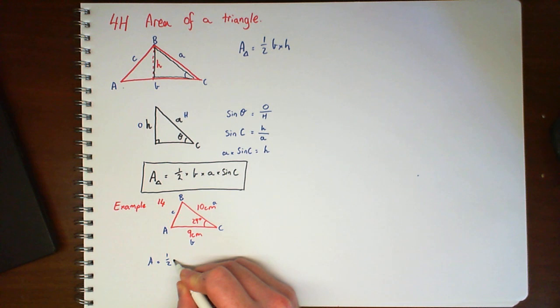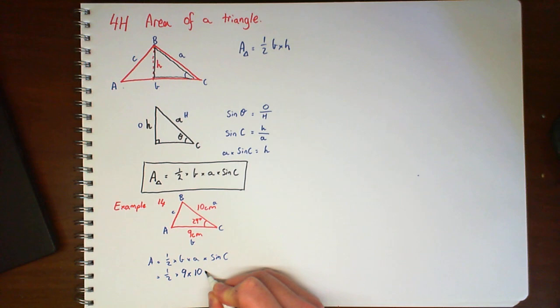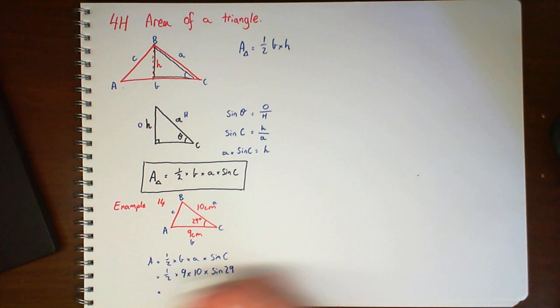And then we've got our area. It's half times B times A times sine of C. So we'd have half times 9 times 10 times sine of 29. And if we work that out, we should get about 21.8 cm squared.